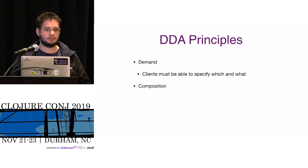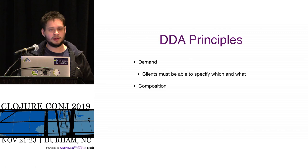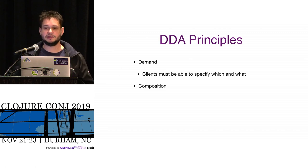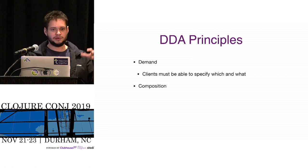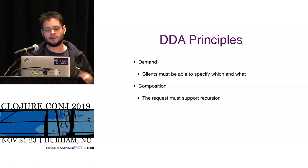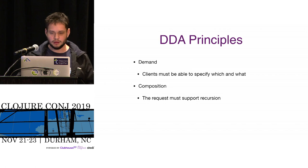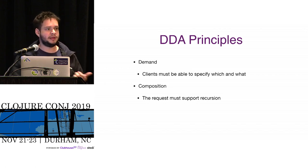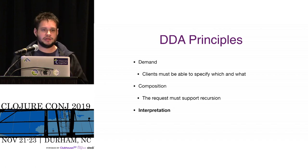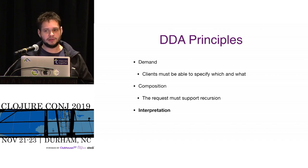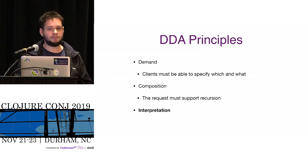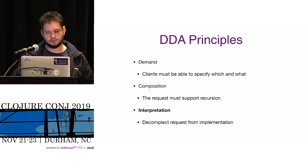So I find it quite nice that they set some principles for DDA. The first principle is demand — the client must be able to specify exactly what it needs, both the "which" and the "what." There's also a need for composition, because parts of your "what" may relate to different entities, and from those you also need to specify the "what" — so this is a recursive property. The third principle is interpretation: whatever this language is, it needs to be interpreted on the server and not tied to a single implementation or a single database.